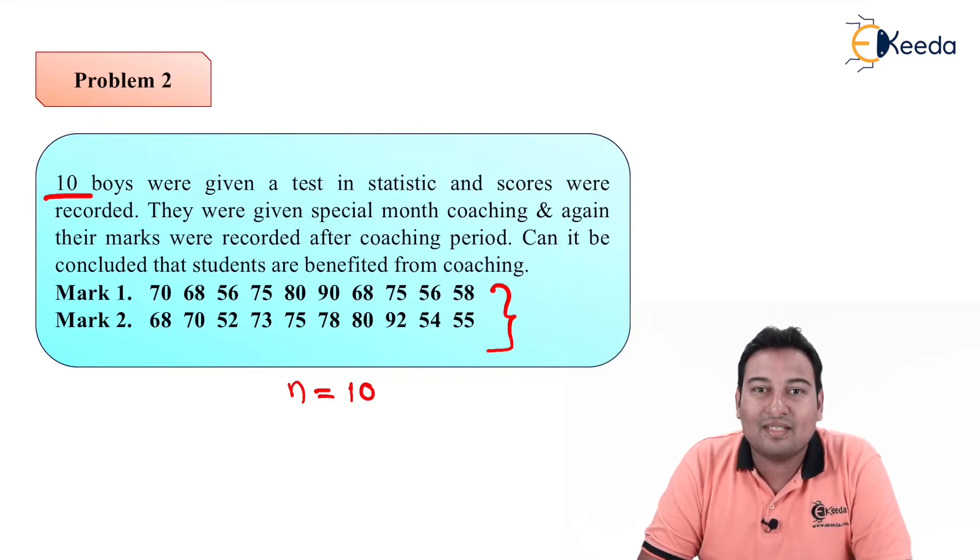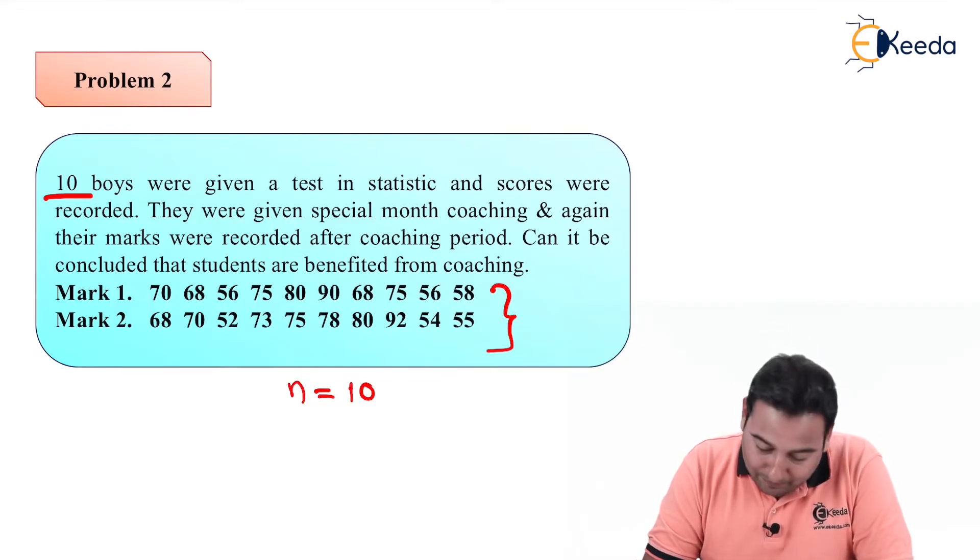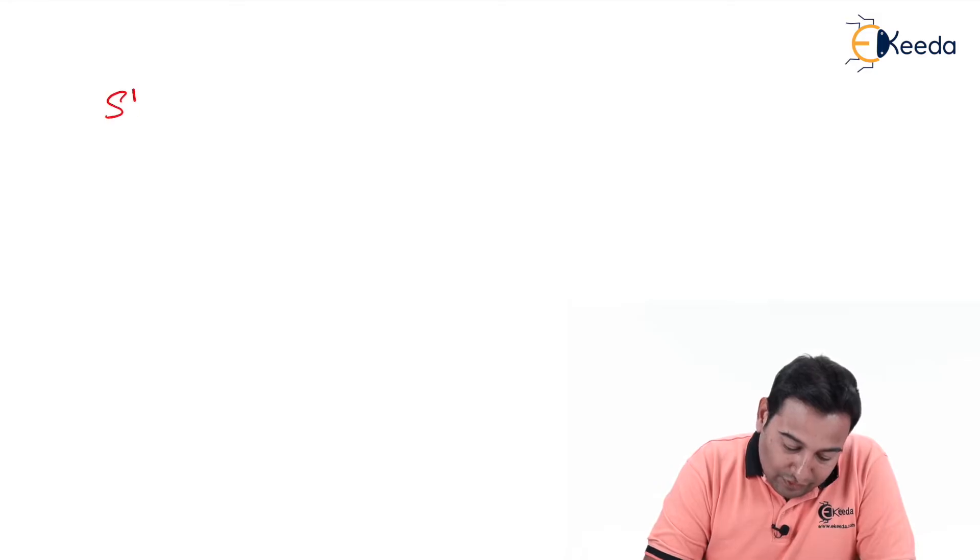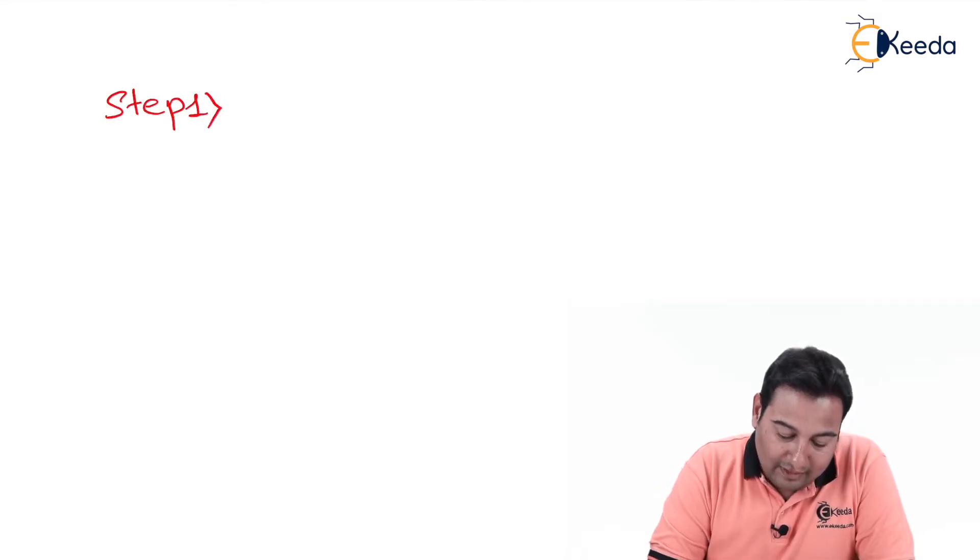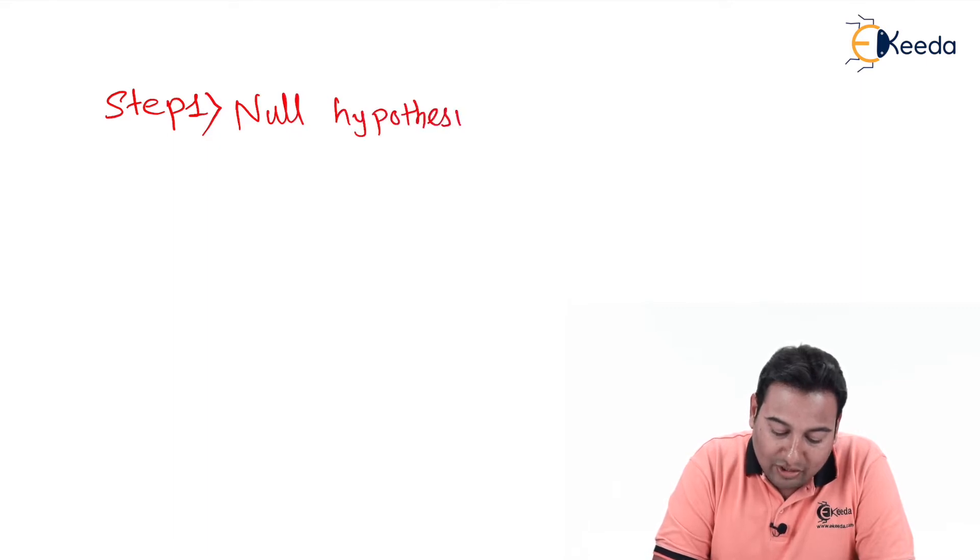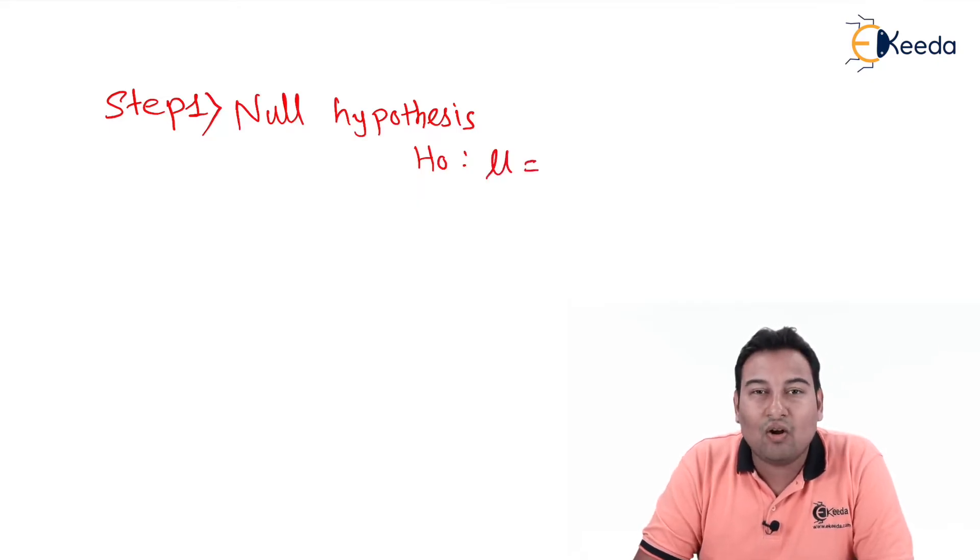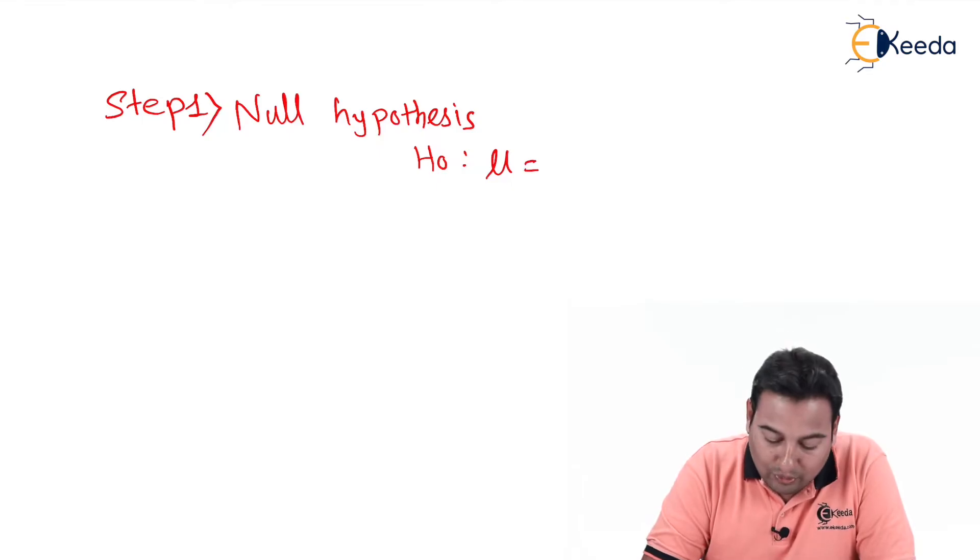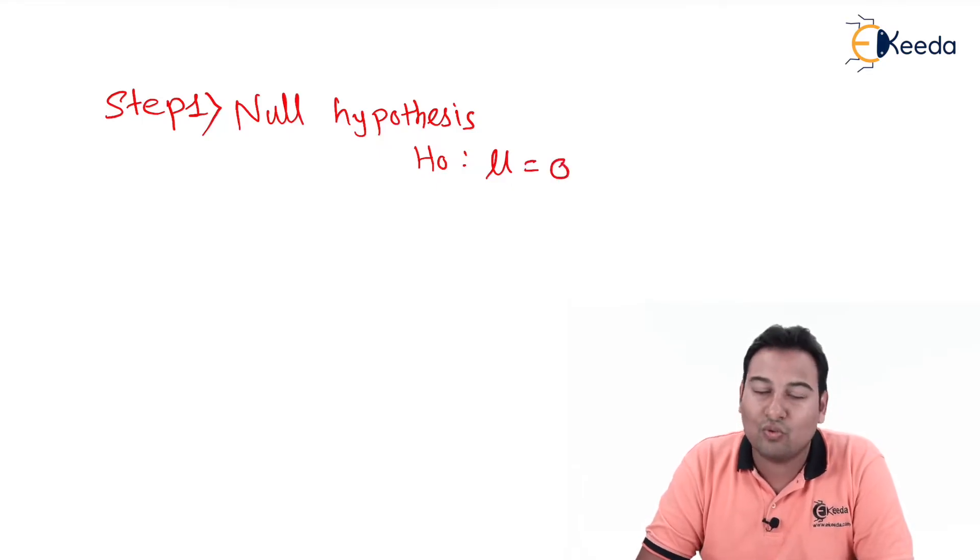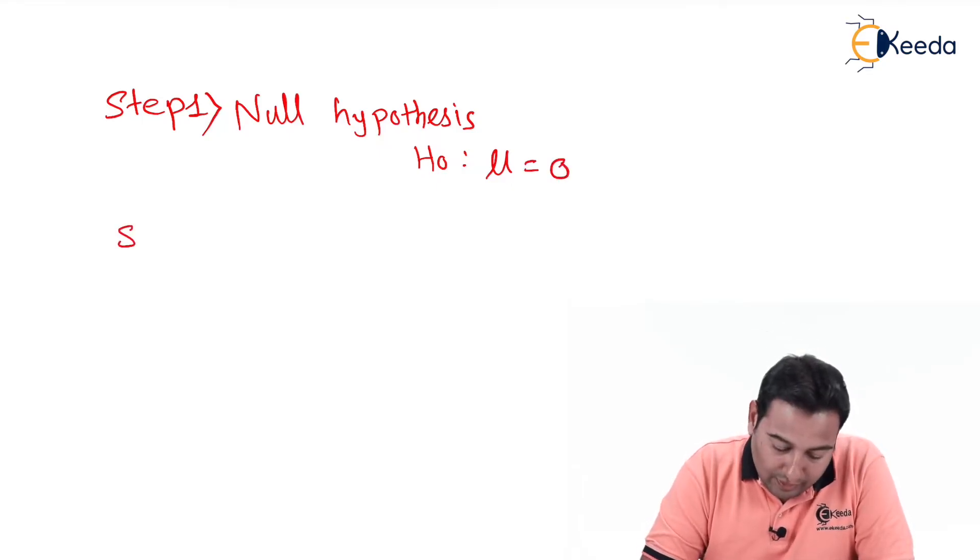Can it be concluded that the students are benefited from coaching? The students are the same, the sample is the same, so let us start solving the problem. Step number one is the null hypothesis. Simply write it down as H0, and as we discussed in this particular type, we always take μ equal to 0, that means we assume there is no change.